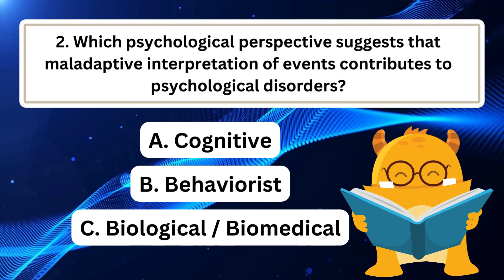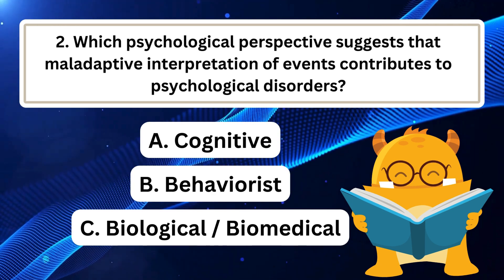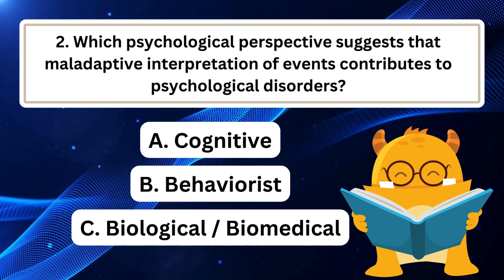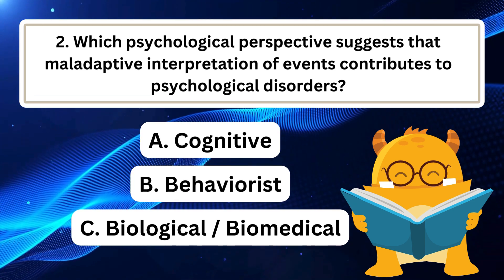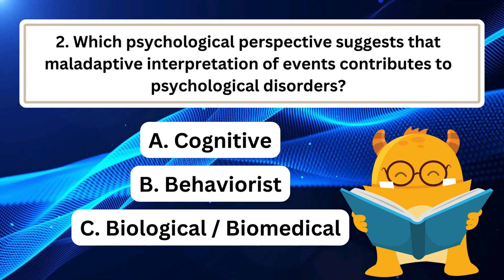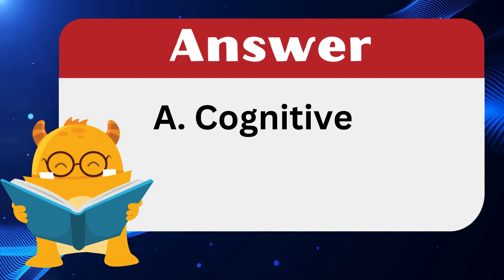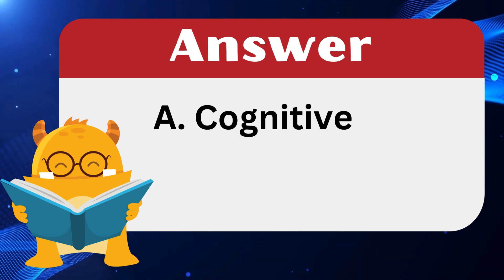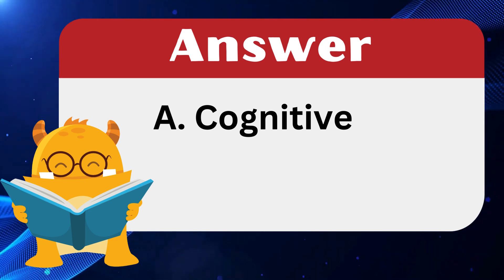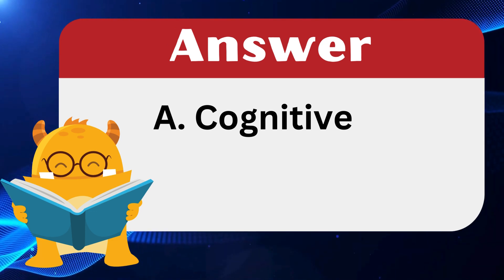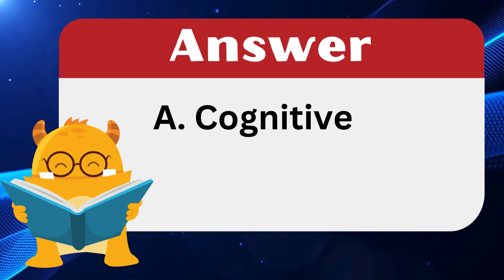Question 2: Which psychological perspective suggests that maladaptive interpretation of events contributes to psychological disorders? The answer is A: Cognitive. The cognitive perspective emphasizes how self-defeating or irrational thoughts and maladaptive interpretations of events can lead to psychological disorders. This perspective focuses on how people's thoughts and perceptions influence their emotions and behaviors, contributing to the development or maintenance of psychological problems.